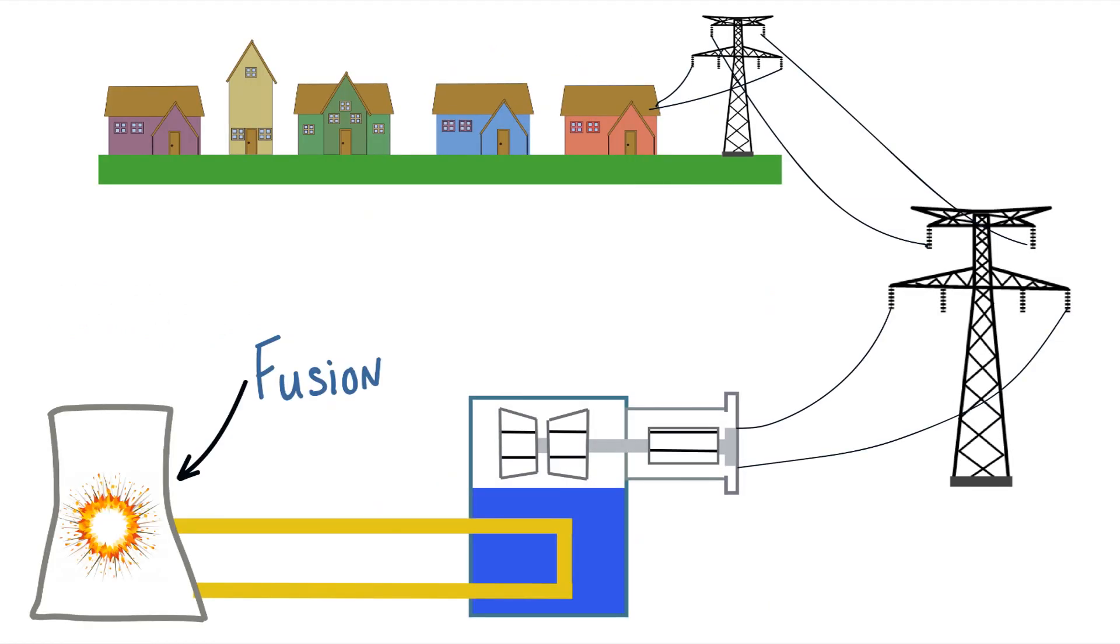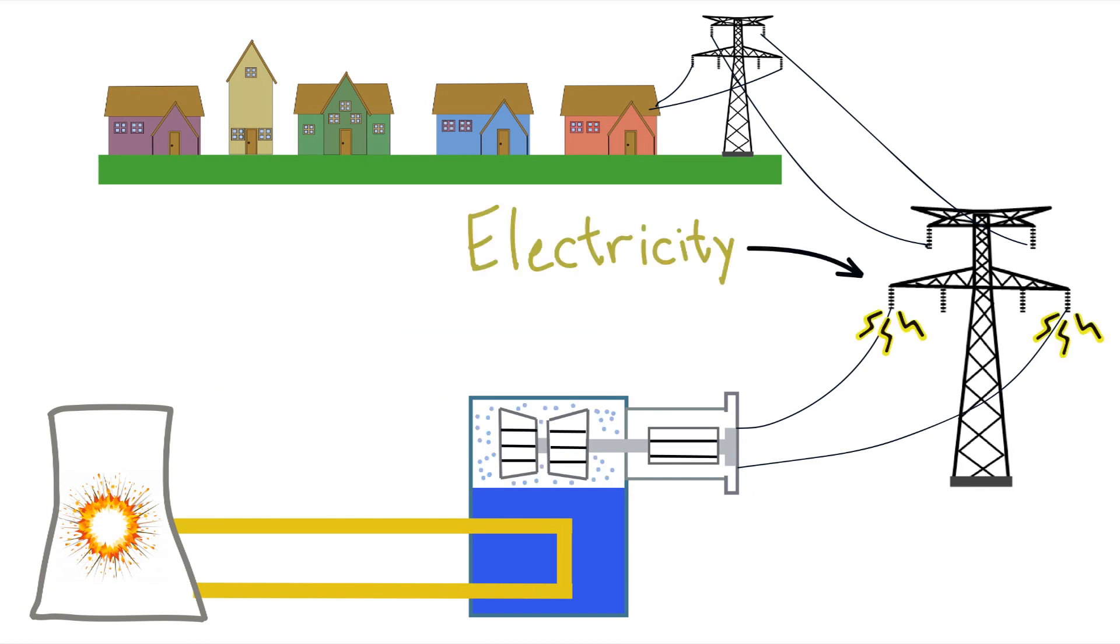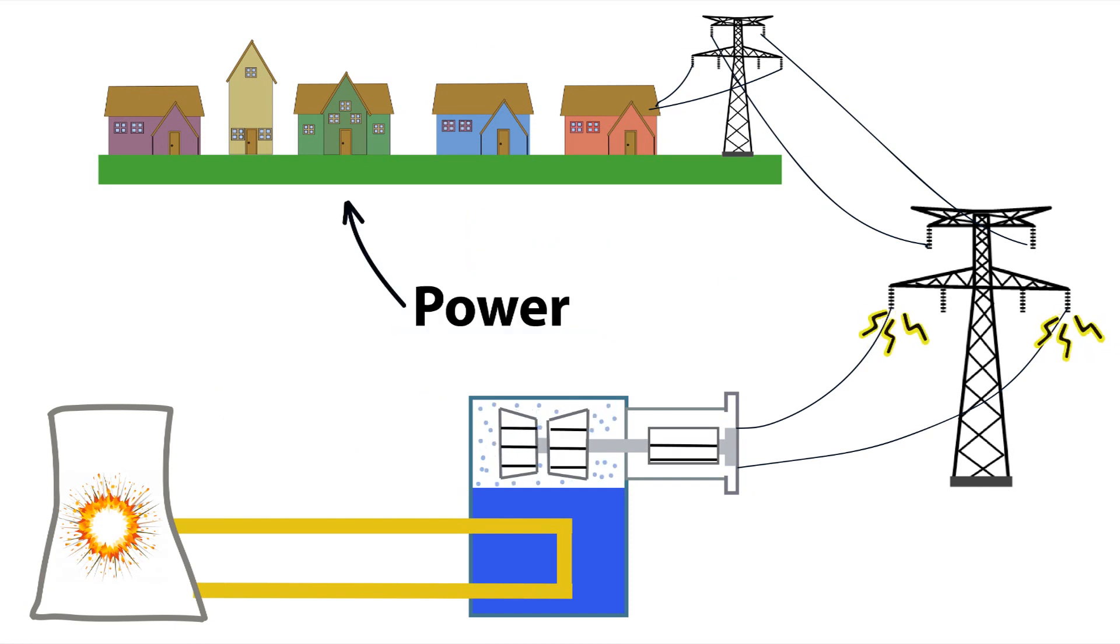If you can create fusion, you can use the heat from the reaction to convert water into steam to then turn a generator, which sends electricity to homes. And voila, power.